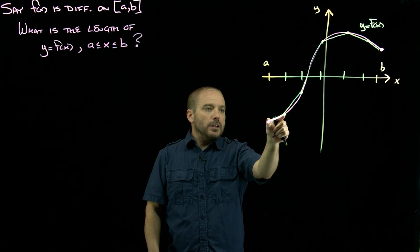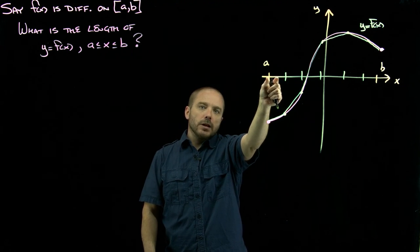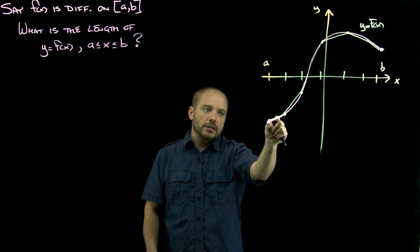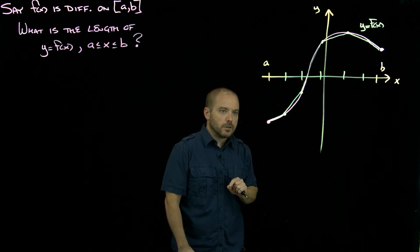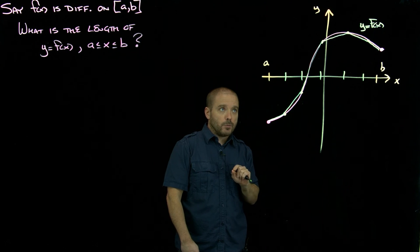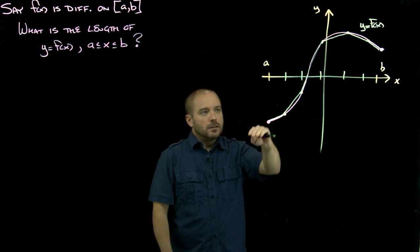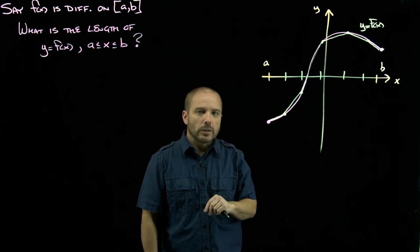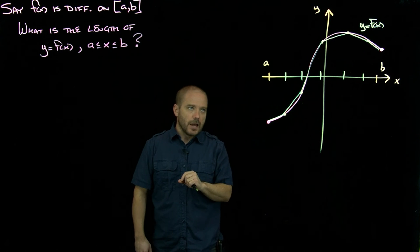As we make this partition such that those sub-intervals get skinnier and skinnier, these line segments will get shorter and shorter, and they'll get better and better at approximating the length of the curve. So let's just look at one of those line segments.